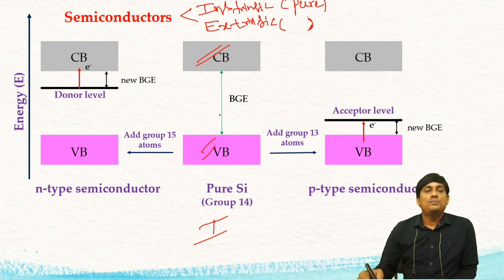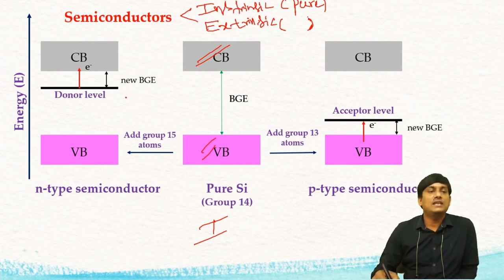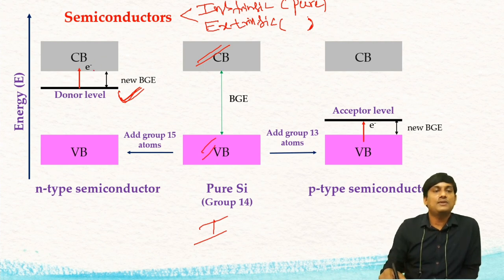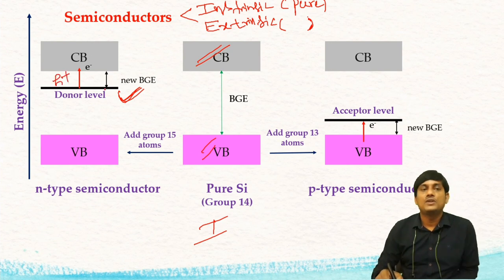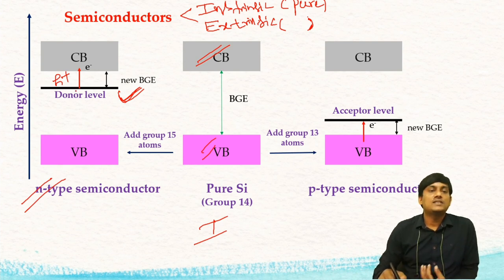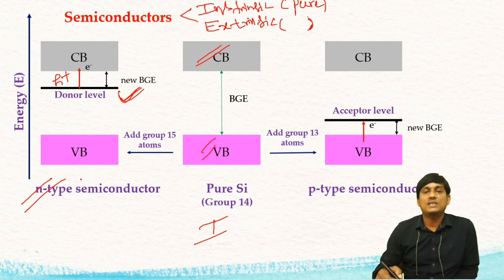If you dope group 15 atoms into pure silicon, there is a creation of a new energy level called the donor level, filled with electrons, which is close to the conduction band. The electrons from the donor level are transferred to the conduction band, resulting in an electron in the conduction band and a hole in the donor level. Due to the formation of electrons and holes, there is conductivity in this n-type semiconductor. Since the major charge carriers are electrons, these are called n-type semiconductors.